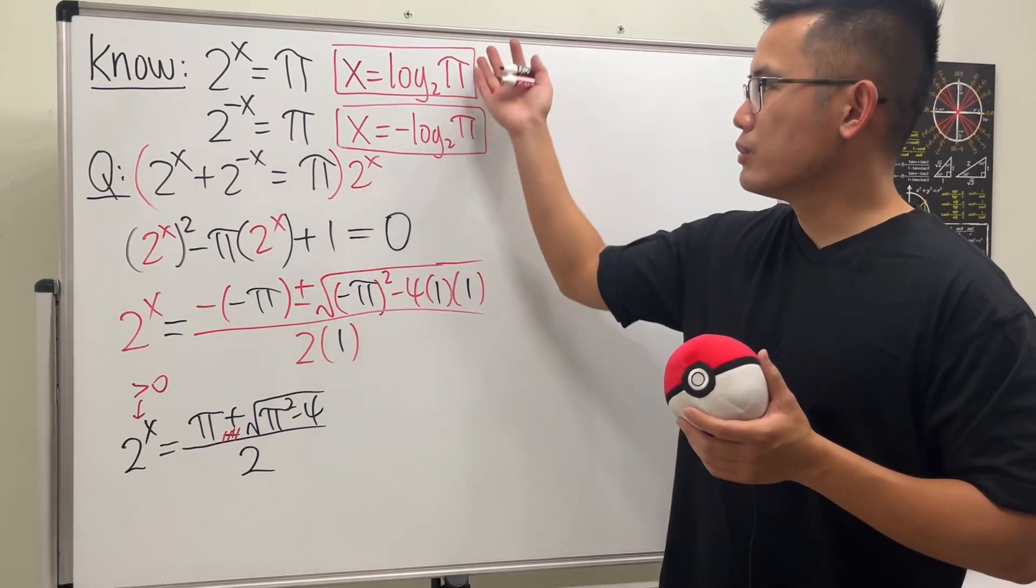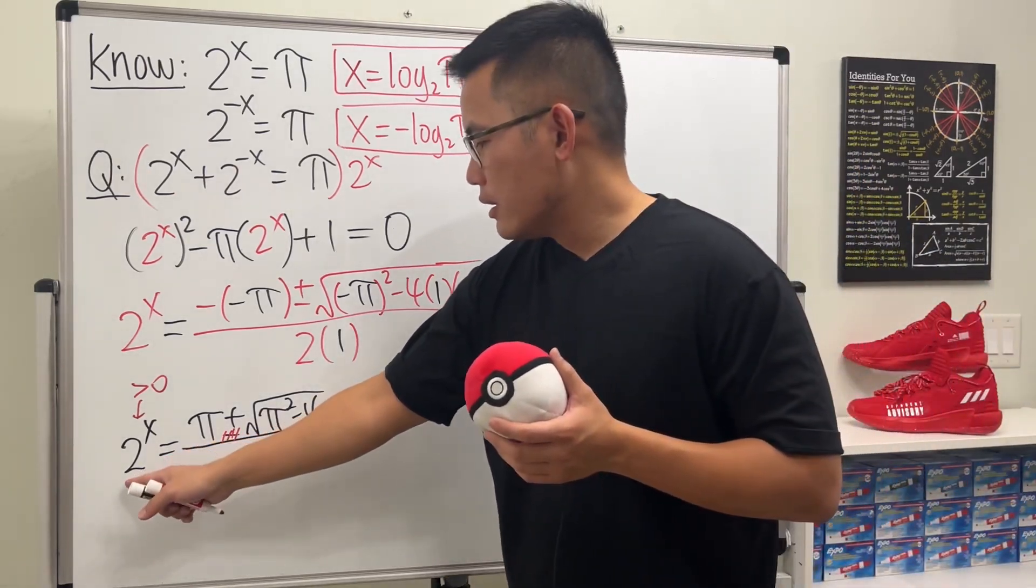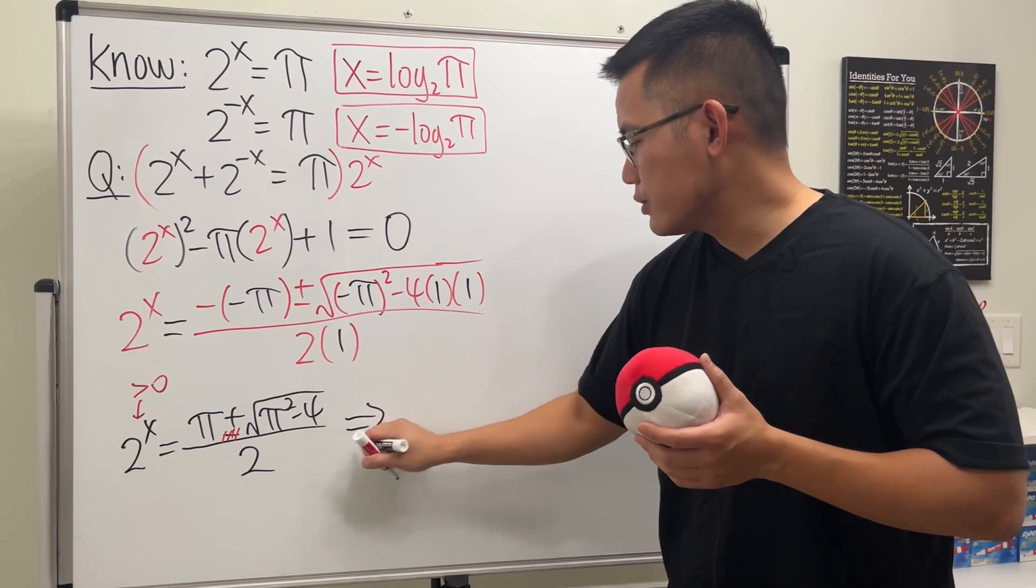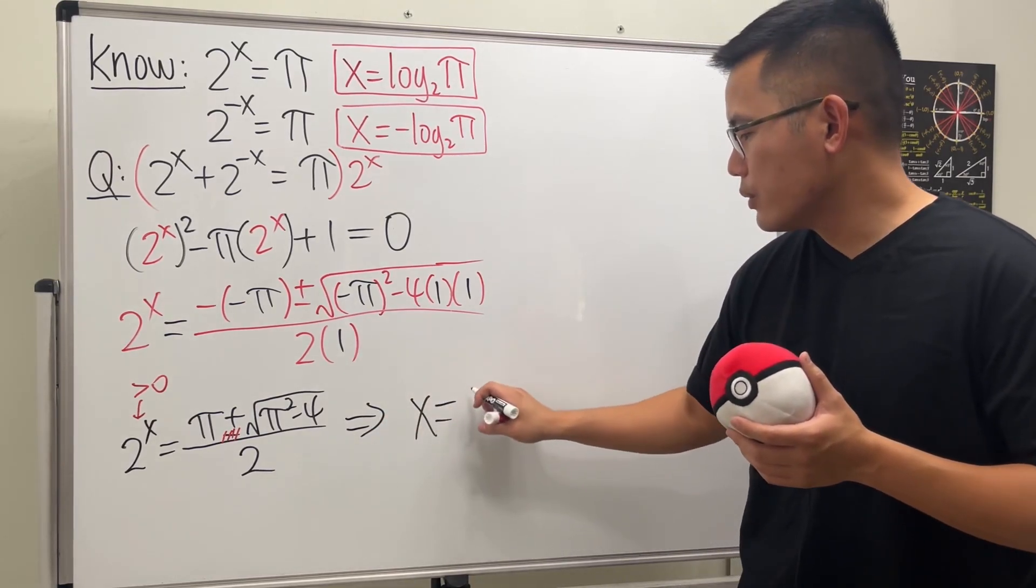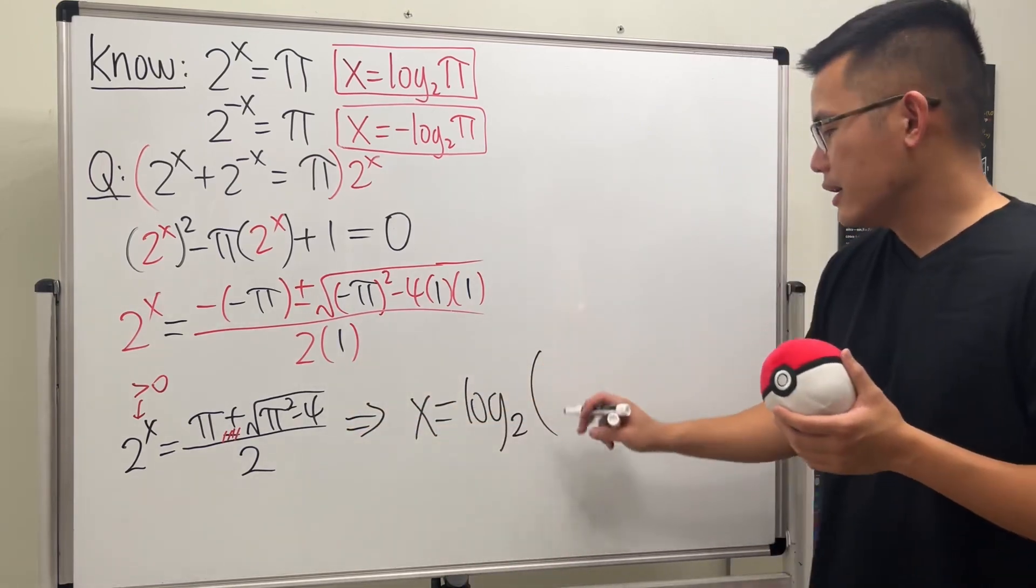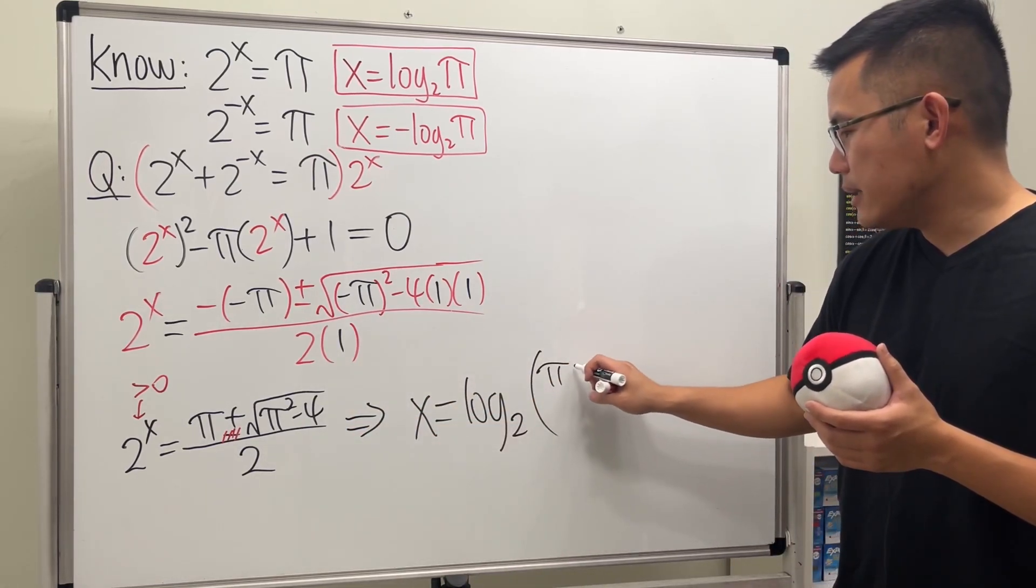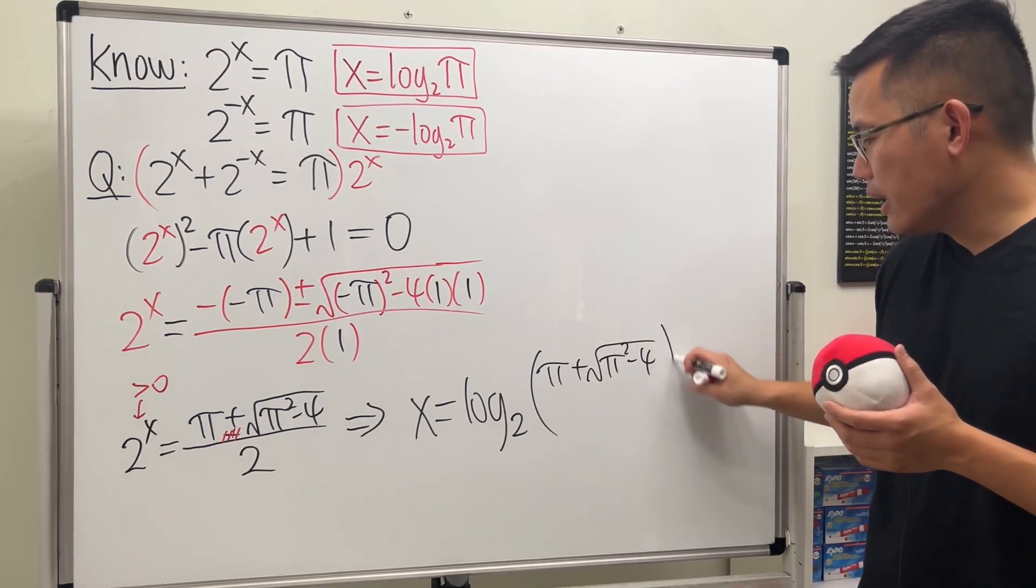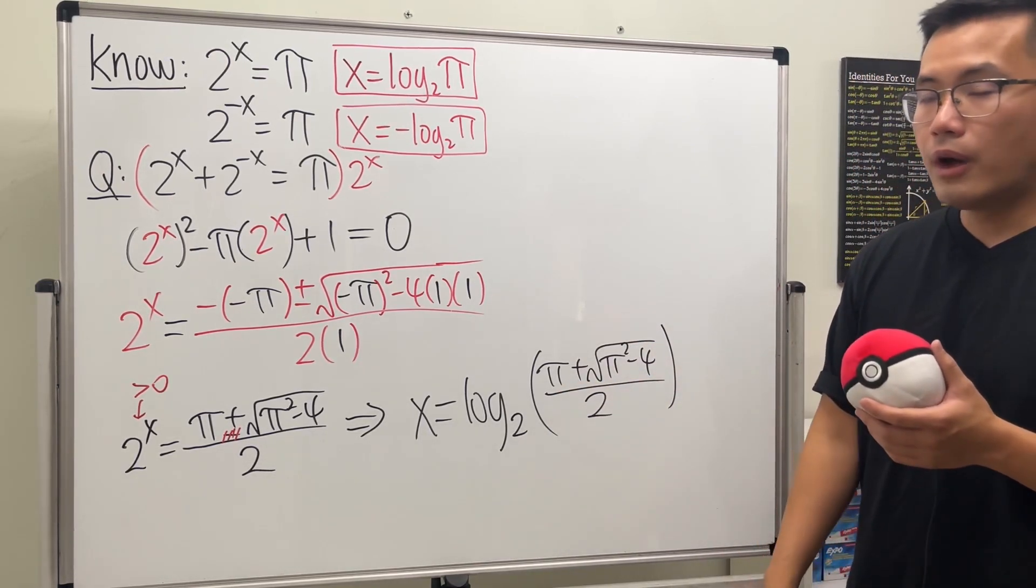So we have that. And finally, we can just do what we did here. However, we have 2 to the x is equal to this. This means we can just take log base 2 on both sides. x will be equal to log base 2. And then we'll just put everything inside. So this is pi plus square root of pi squared minus 4, and then all over 2.